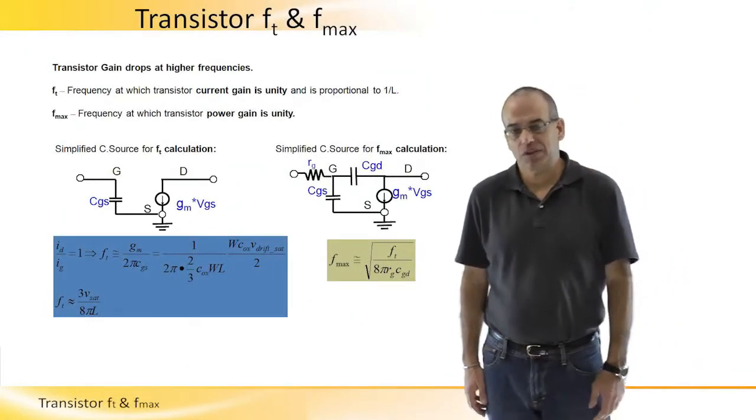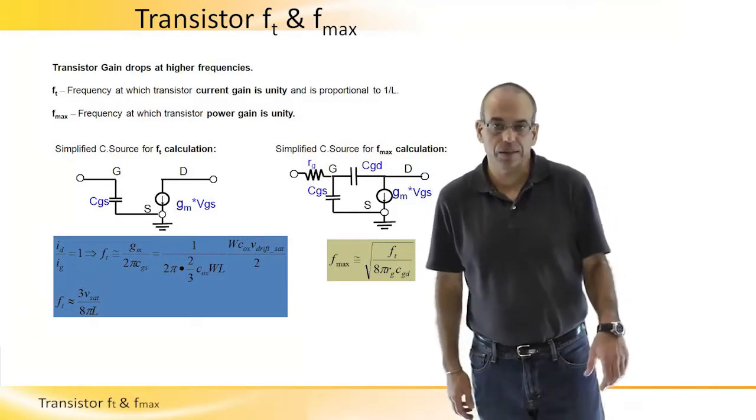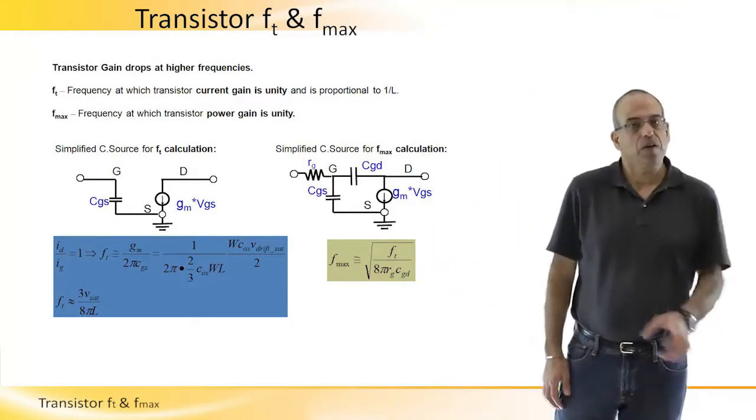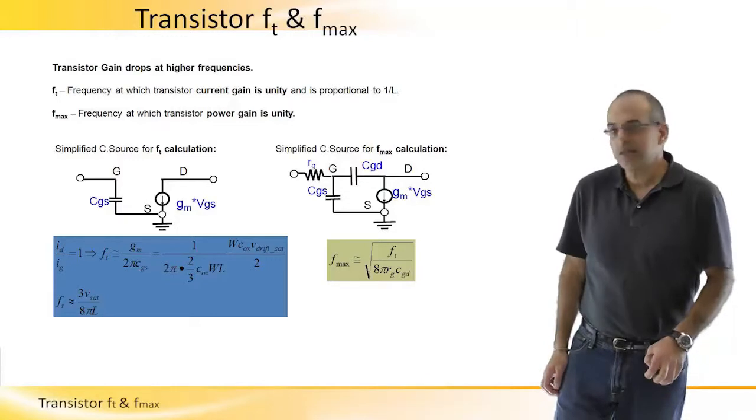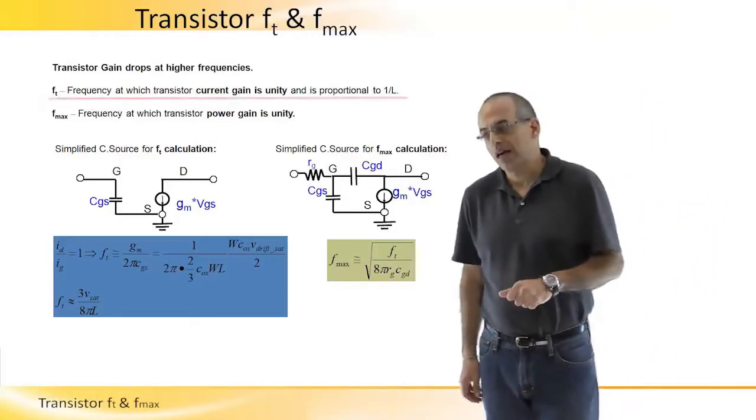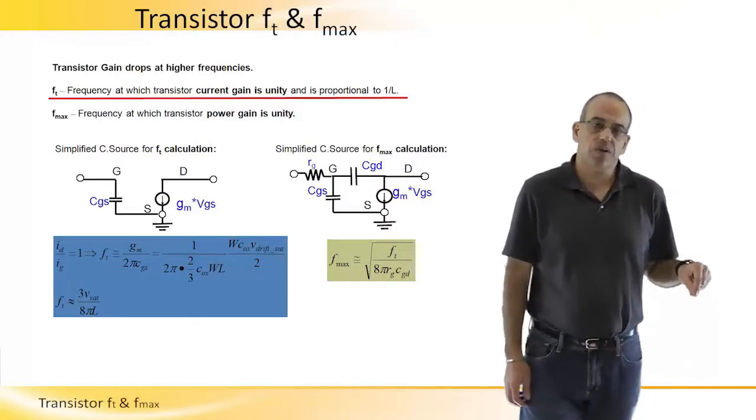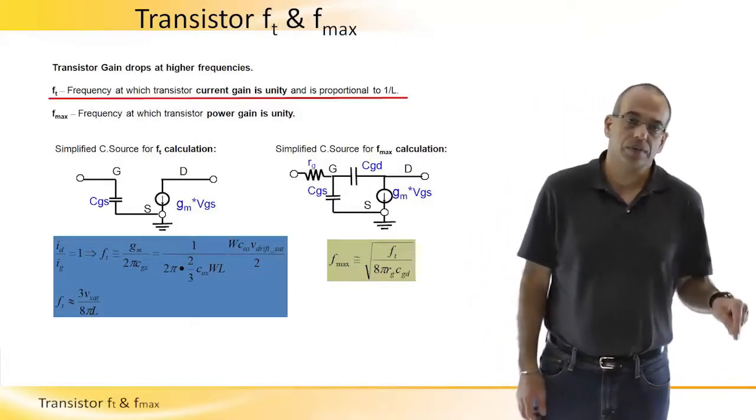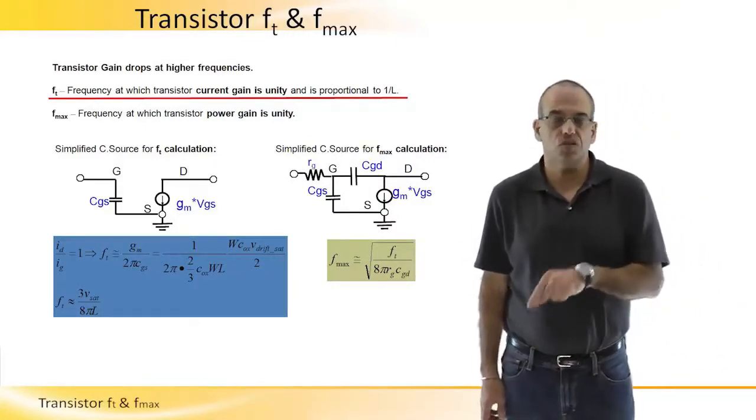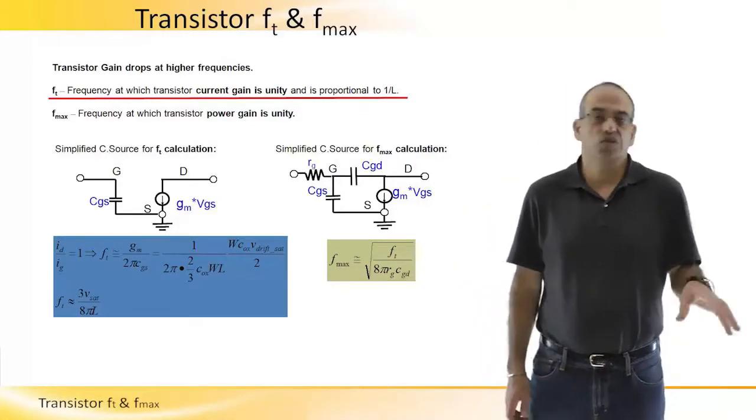RF parameters that are transistor related are Ft and Fmax. Ft is the transition frequency. Transition frequency is the frequency where the current gain of the transistor drops to 1 or 0 in dB.